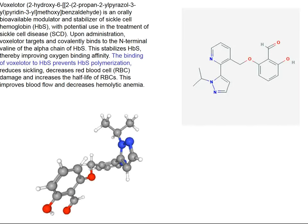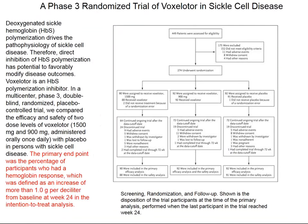Voxelotor is a new treatment — a small molecule that binds to hemoglobin S and prevents polymerization from occurring. That activity would imply that hemolysis would be reduced, and we would expect the hemoglobin level of patients receiving voxelotor to increase, and hopefully their vascular occlusive episodes to decrease. In this phase 3 randomized trial, patients recruited from all over the planet were randomized to placebo or two different doses of voxelotor. The primary endpoint was an increase in hemoglobin level of 1 gram per deciliter after 24 weeks of treatment.